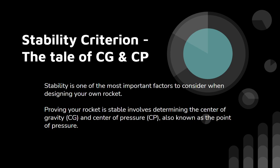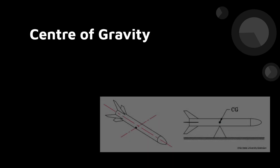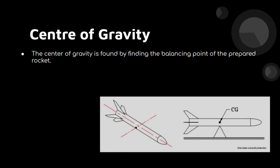Proving that your rocket is stable involves determining two points: the CG and the CP. The CG, or center of gravity, is the balancing point on the rocket — the point where the bulk of the gravitational force acts on the rocket.